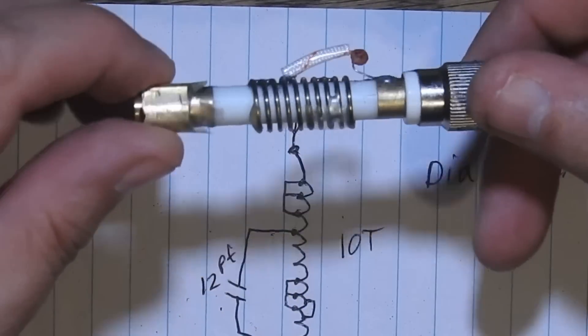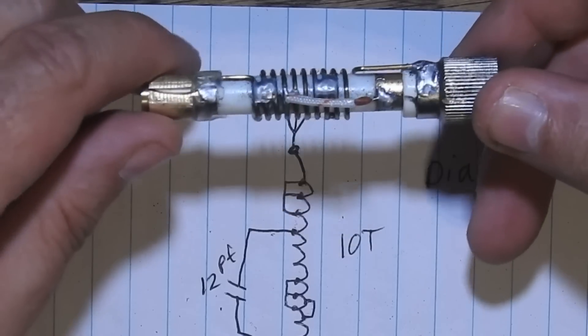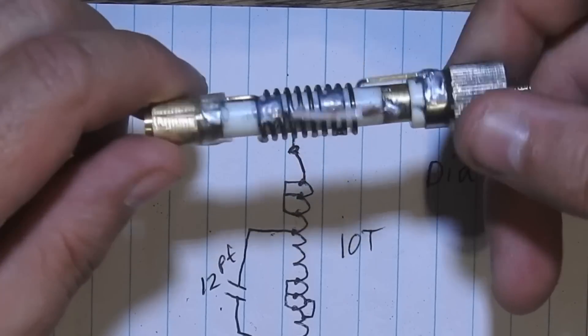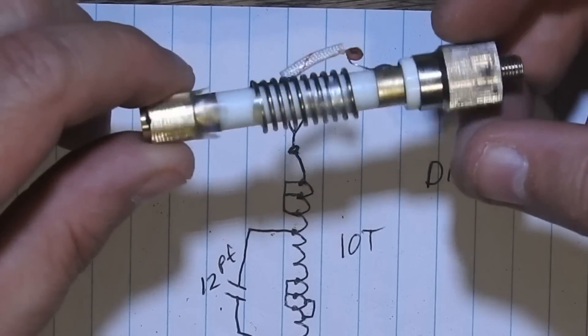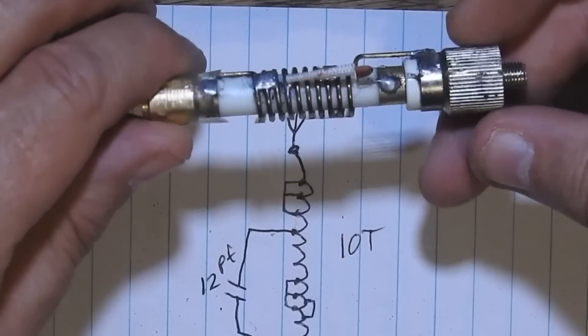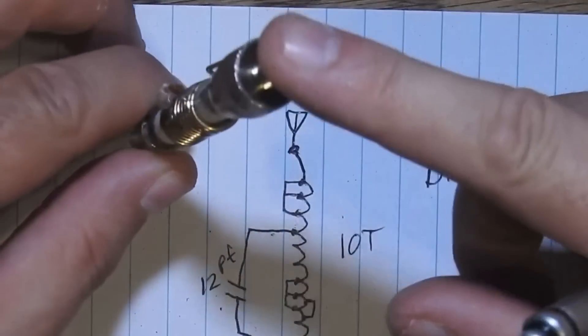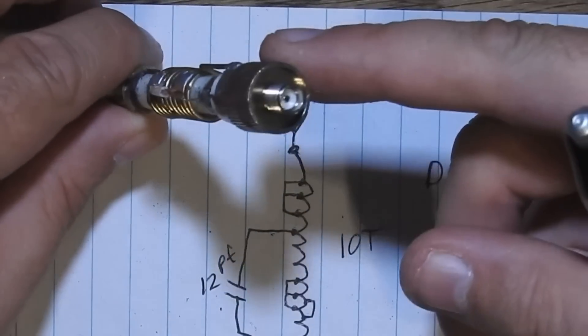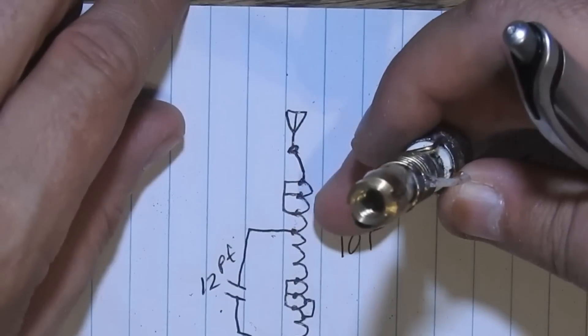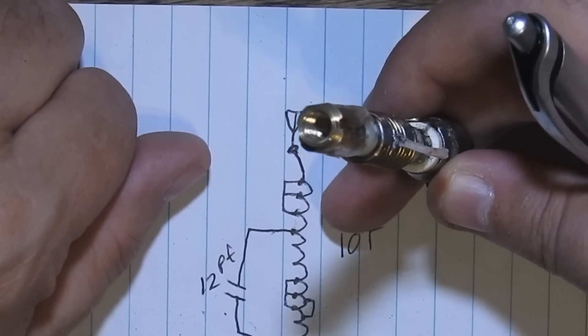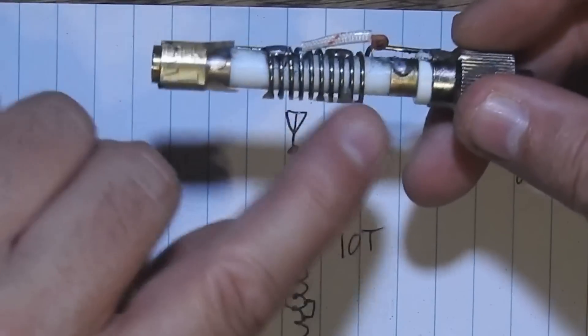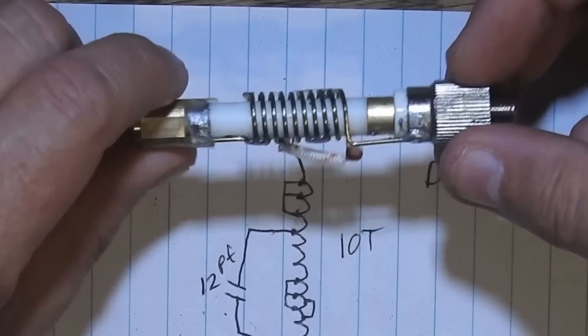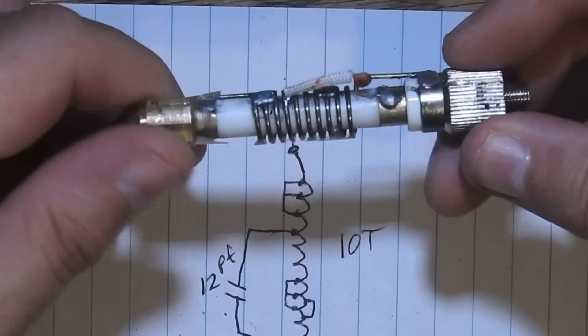This might be a useful part, you know. I'm going to throw this in the parts box because I might find a way to use this. Maybe even wind a different coil on here for a different application. I mean, it's an SMA connector that will go on the HT. It's a threaded end that I could put just about anything on. So I could put whatever kind of coil I needed in there. Yeah, this is going to go in the parts bin.